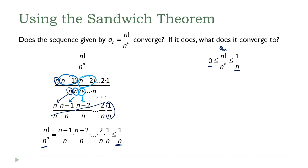Both of these terms on the end, those both go to 0. My limit is squeezed in between them. So the limit of my sequence as n goes to infinity is also going to be 0. So the sequence does converge and 0 is what it converges to.